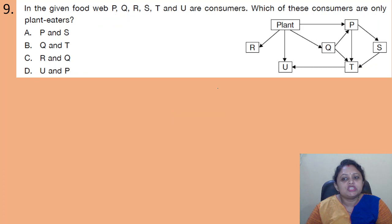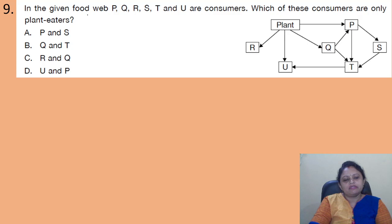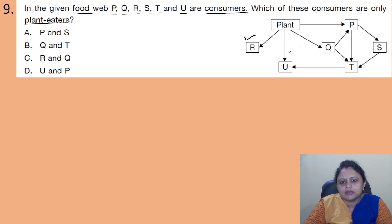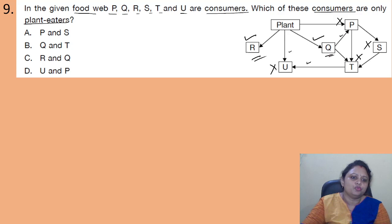Coming to the next question: in the given food web, P, Q, R, S, T, and U are consumers. Which of these consumers are only plant eaters? Options: A - P and S; B - Q and T; C - R and Q; D - U and P. Analyzing the food web: R is only a plant eater, Q is also only a plant eater. P, U, T, and S eat from multiple sources. The correct answer is option C — R and Q.